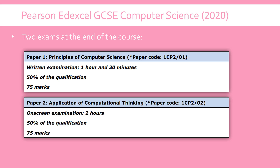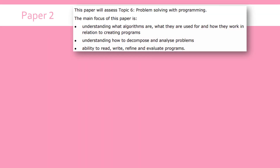Paper 1 does have programming in it — you might get a trace table, you might have to write some pseudocode and answer questions on programming theory. Paper 2 is just the application of this directly. This will dictate how you prepare for it and it will be different from Paper 1 in some ways, because on paper there is less to prepare for — you haven't got such a long list of topics as you do for Paper 1.